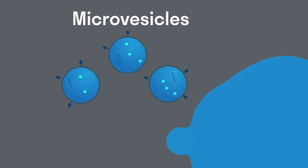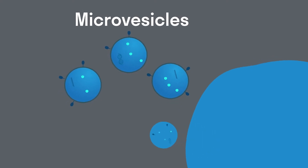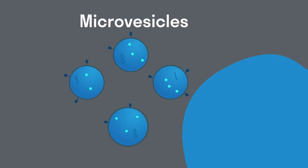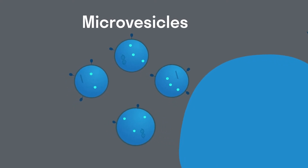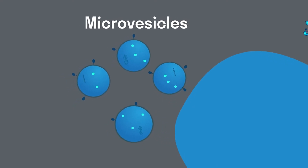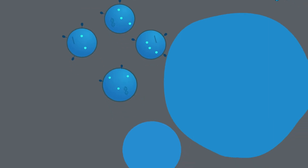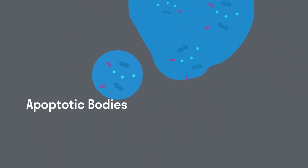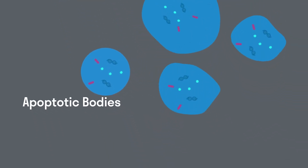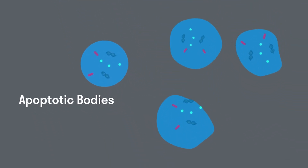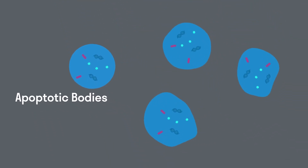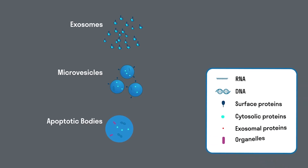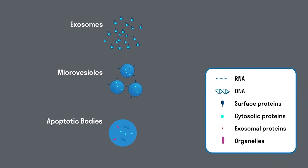Microvesicles arise from the outward budding and fission of the plasma membrane and range in diameter from 50 to 1,000 nanometers. Apoptotic bodies can be as large as 5,000 nanometers in diameter and are produced as part of plasma membrane blebbing during apoptosis.